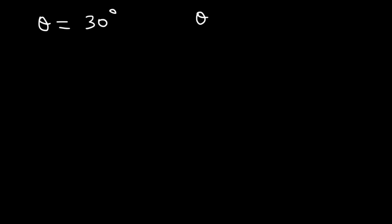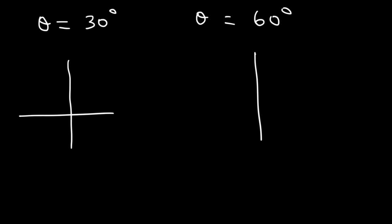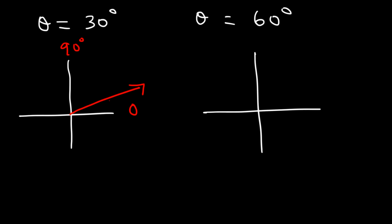Let's draw an angle of 30 degrees and 60 degrees. We know 45 is right in the middle between 0 and 90, so 30 should be closer to 0 than to 90 — that's an angle of 30 degrees. 60 is closer to 90 than to 0, so it should be somewhere in this region — that's an angle of 60 degrees relative to the positive x-axis, where the initial side is.